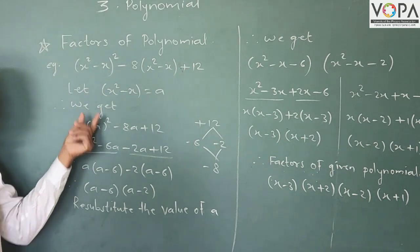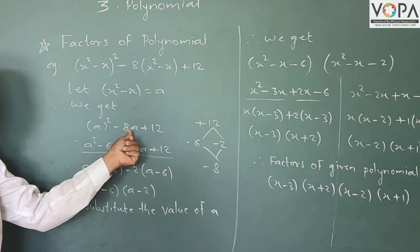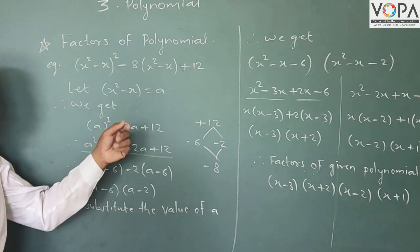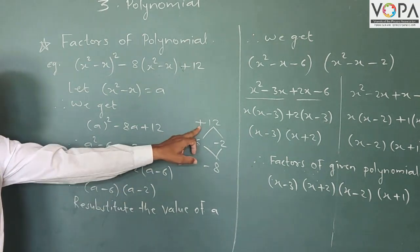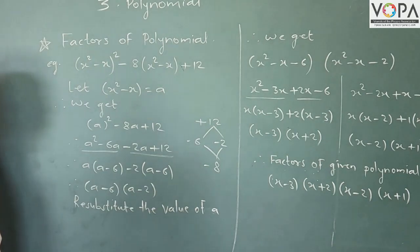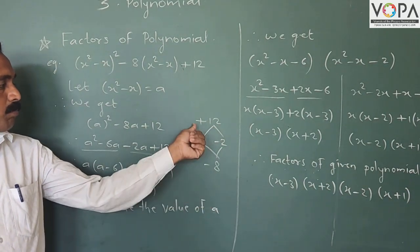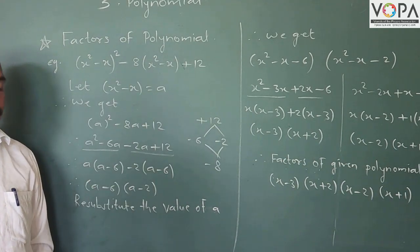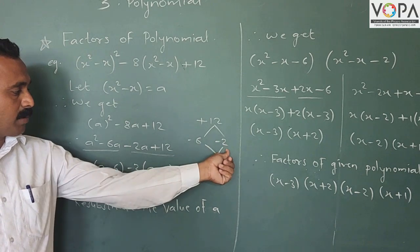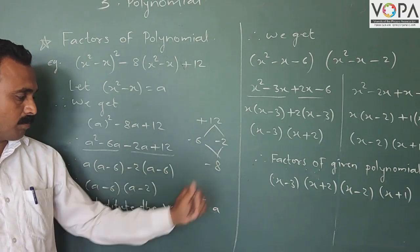Now let a = x² − x. The expression becomes a² − 8a + 12. Find the factors: the product is 12 and the middle term sum is minus 8. So we need two factors whose sum is minus 8 and product is 12. Those are minus 6 and minus 2, since (−6) × (−2) = 12 and (−6) + (−2) = −8.